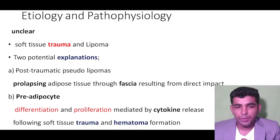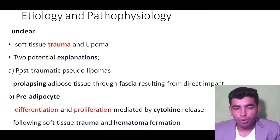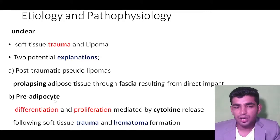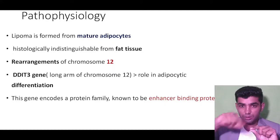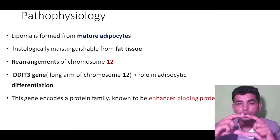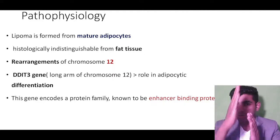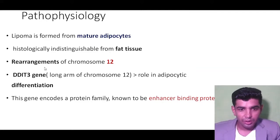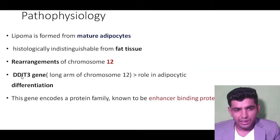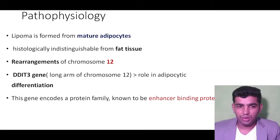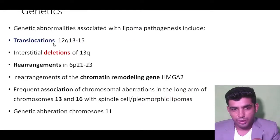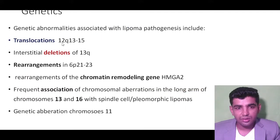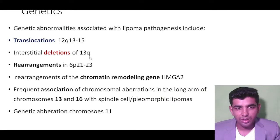Regarding etiology and pathophysiology, two potential explanations exist: post-traumatic pseudolipomas, and the formation of mature adipocytes. The adipocytes form in lobules separated by fibrous septa. The most important genetic mechanism is rearrangement of chromosome 12 and the DDI3 gene — specifically a translocation at chromosome 12q and interstitial deletion of 13q.